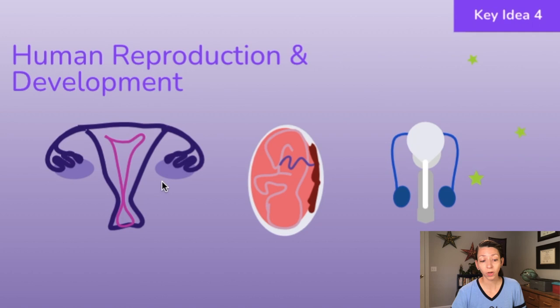Once a fertilized egg implants in the lining of the uterus, the uterus is going to provide an environment that supports the development of the embryo and the fetus. The placenta, which is connected to the developing embryo through the umbilical cord, provides essential nutrients and materials for the developing fetus.